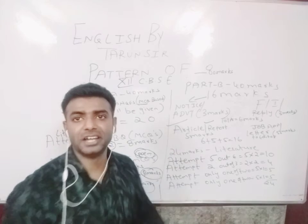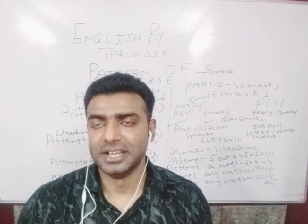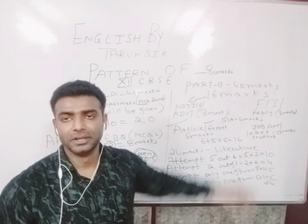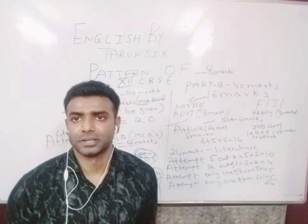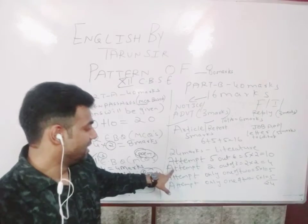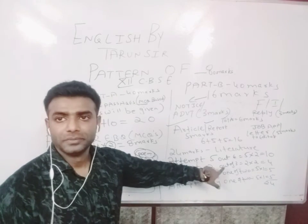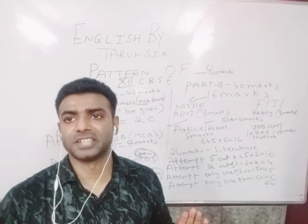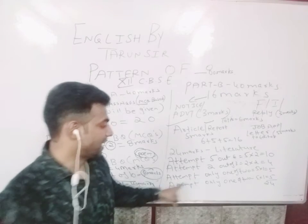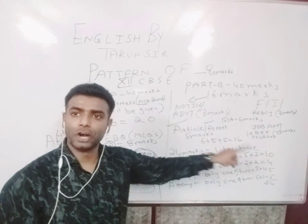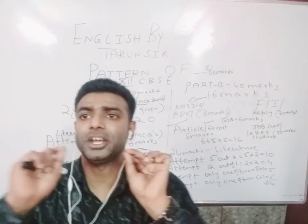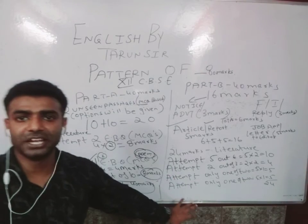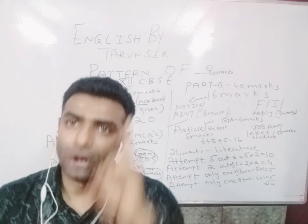Now back to the literature part — subjective questions worth 24 marks. Number one: attempt five out of six questions, at two marks each, totalling 10 marks, from both books. Then attempt two questions out of three, at two marks each, totalling 4 marks — follow the word limit. Then long answers: attempt one out of two questions — 5 marks. And another set: attempt one out of two — 5 marks. In every question you will be getting options everywhere, but all parts are compulsory.